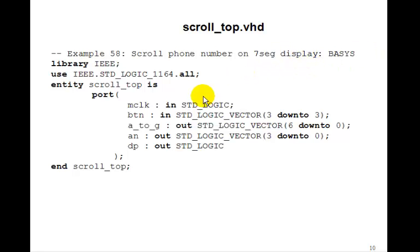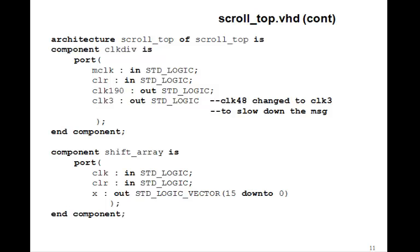So let's do a top level design for this. We'll call it scroll_top, mclock coming in, button, we only need button 3. So we have to make 3 down to 3. And then we have a to g, an, and decimal point out. Here's the component for clock_div. We will change the clock_48 to clock_3 to slow down the message. So we'll make this a clock 3.